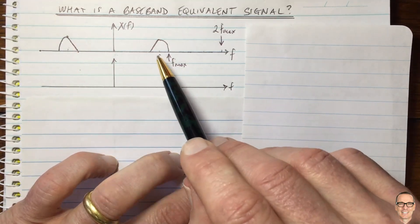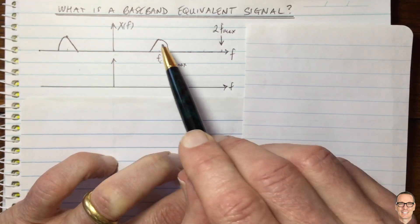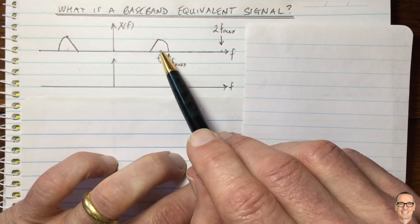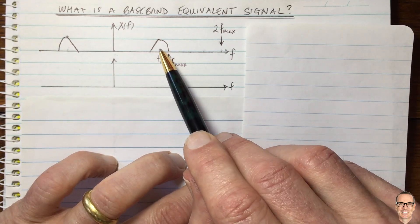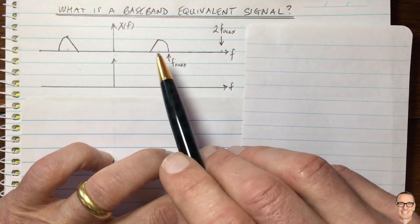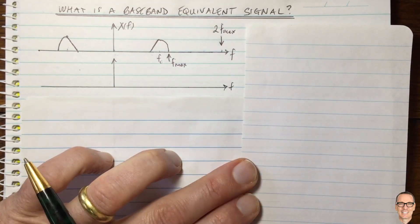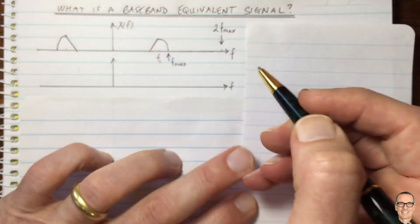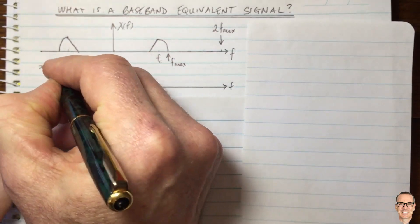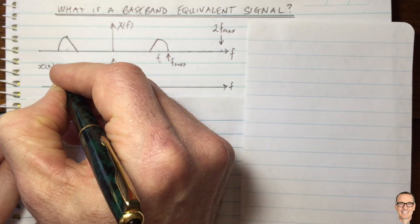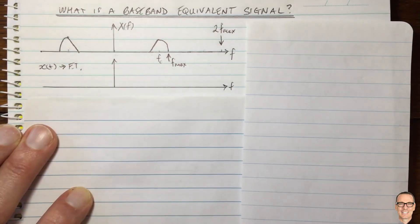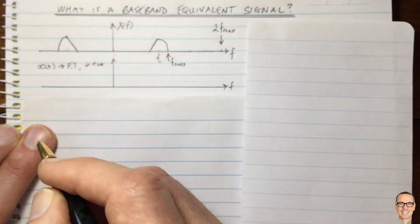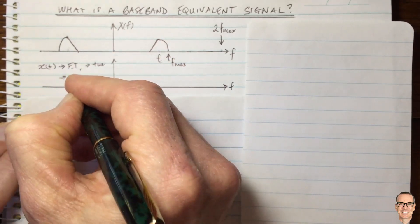Because the spectrum is symmetric, we don't need to keep both copies — there's redundancy in the information in the frequency domain. So to get the baseband or low-pass equivalent of a signal, we take our signal X(t), take its Fourier transform, and then take the positive part.